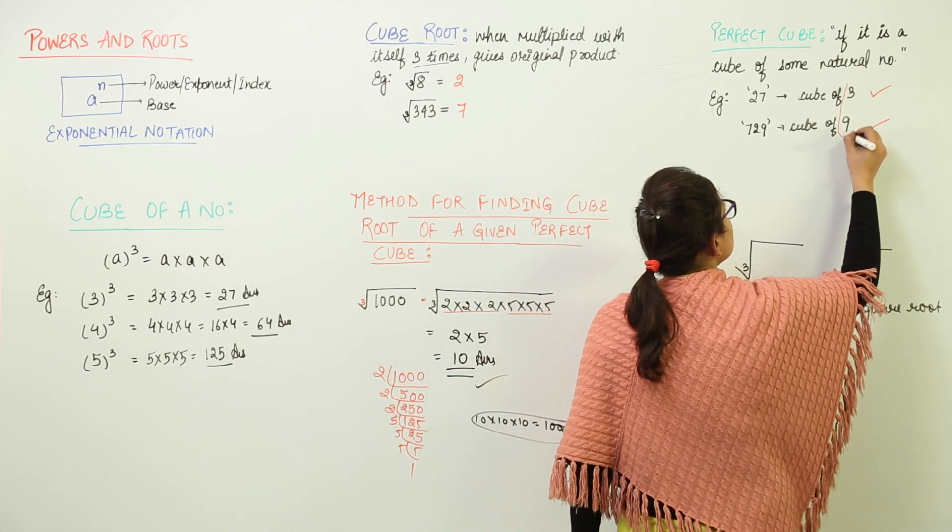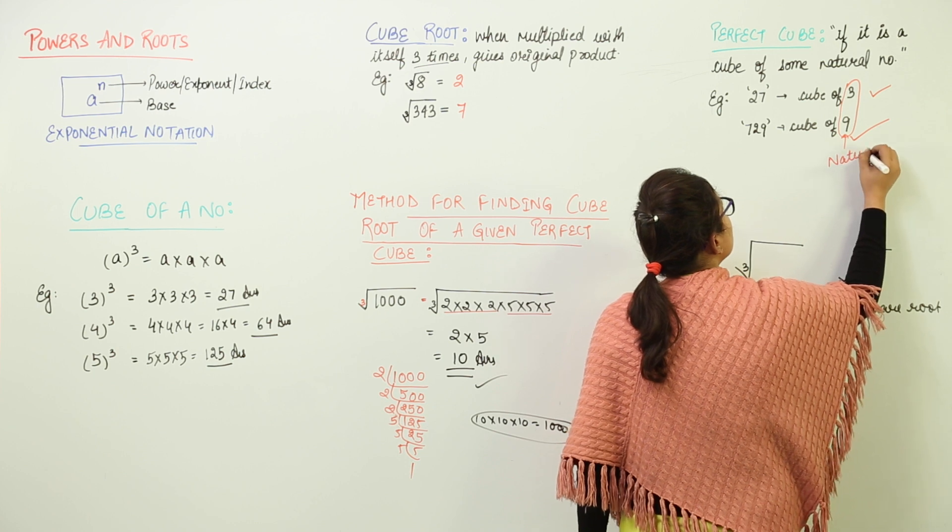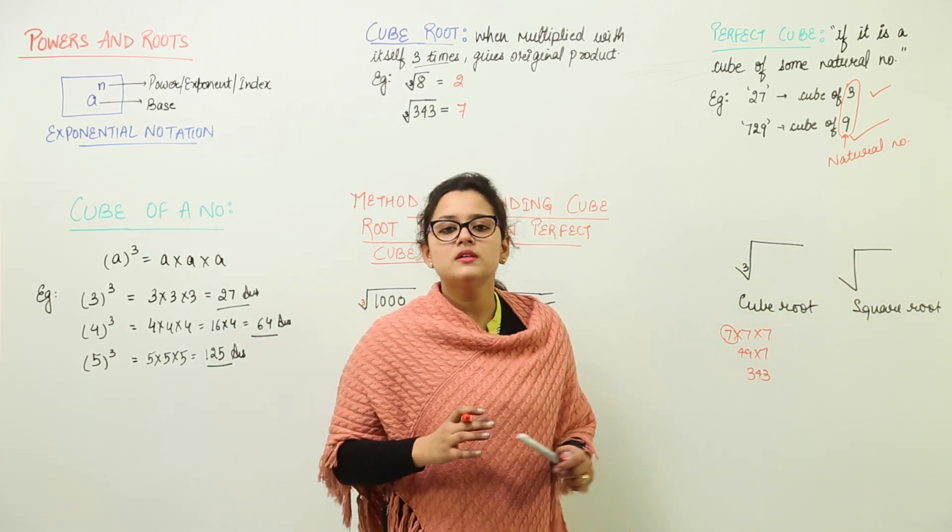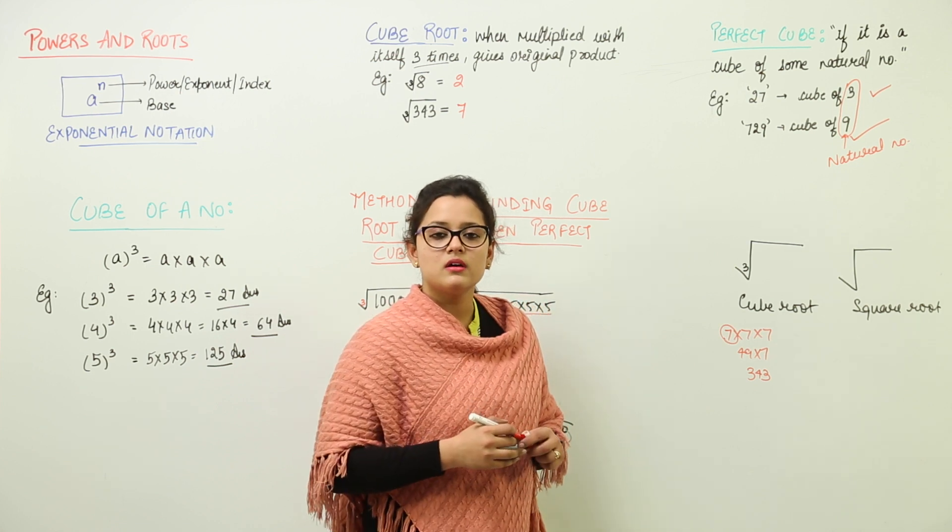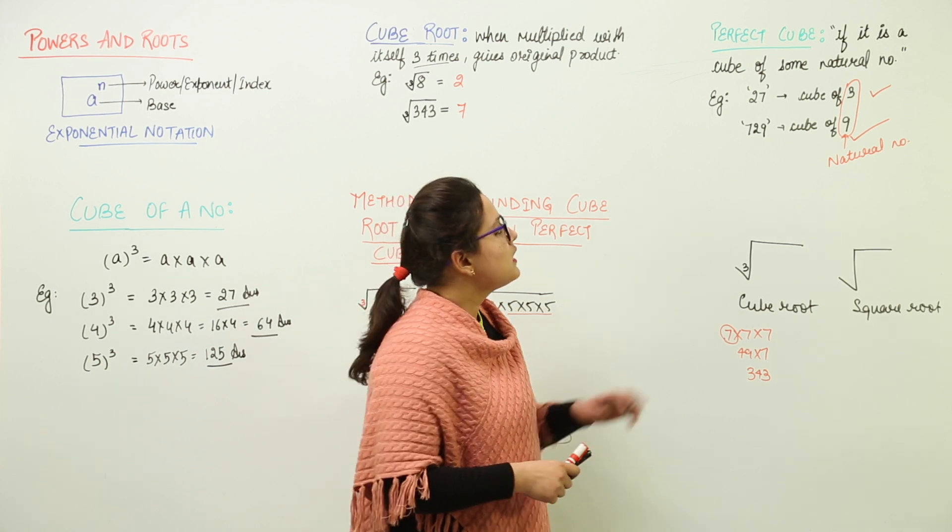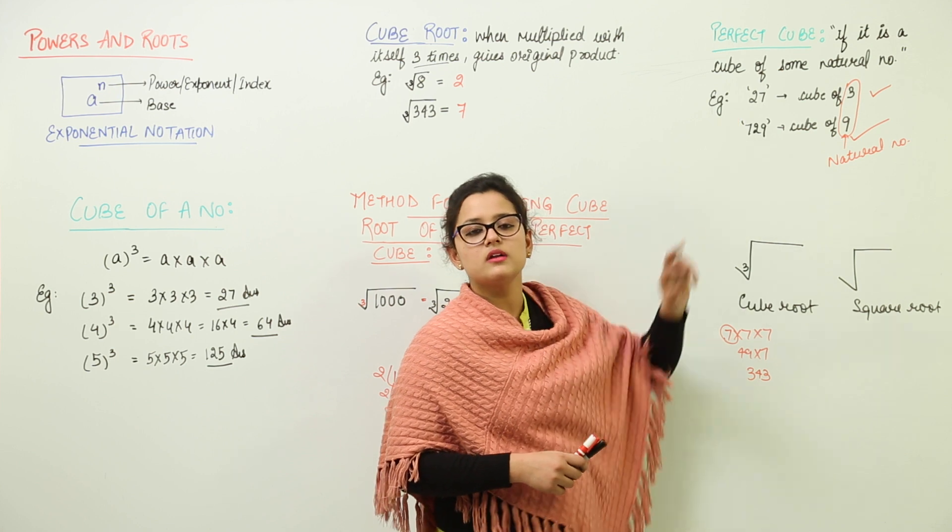Reason being they are cubes of natural numbers. So when you have to check whether a number is a perfect cube or not, just check whether the cube root of that number, whatever number comes as the cube root, is a natural number or not. And if it is a natural number then those numbers which you are checking are the perfect cubes.